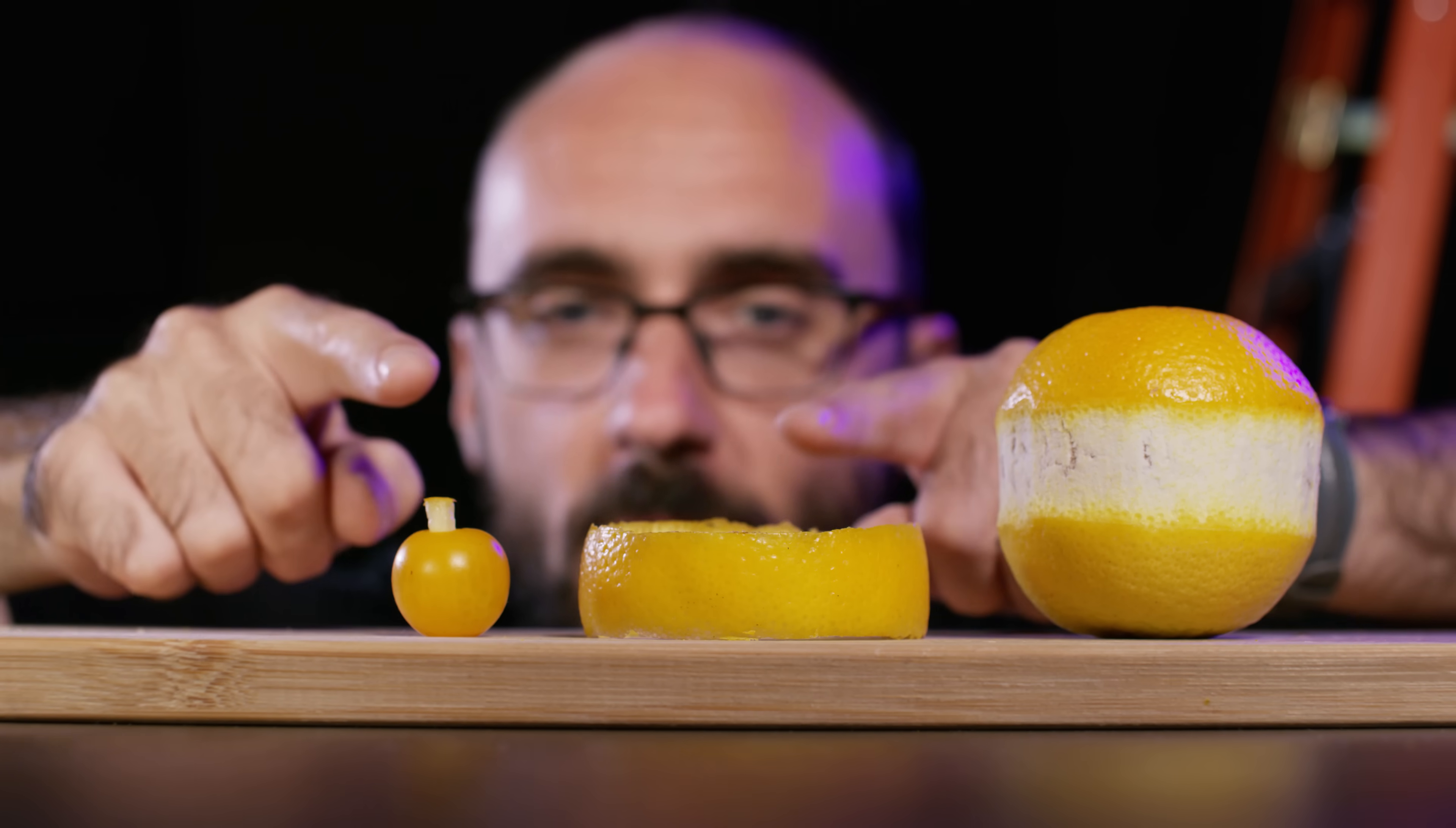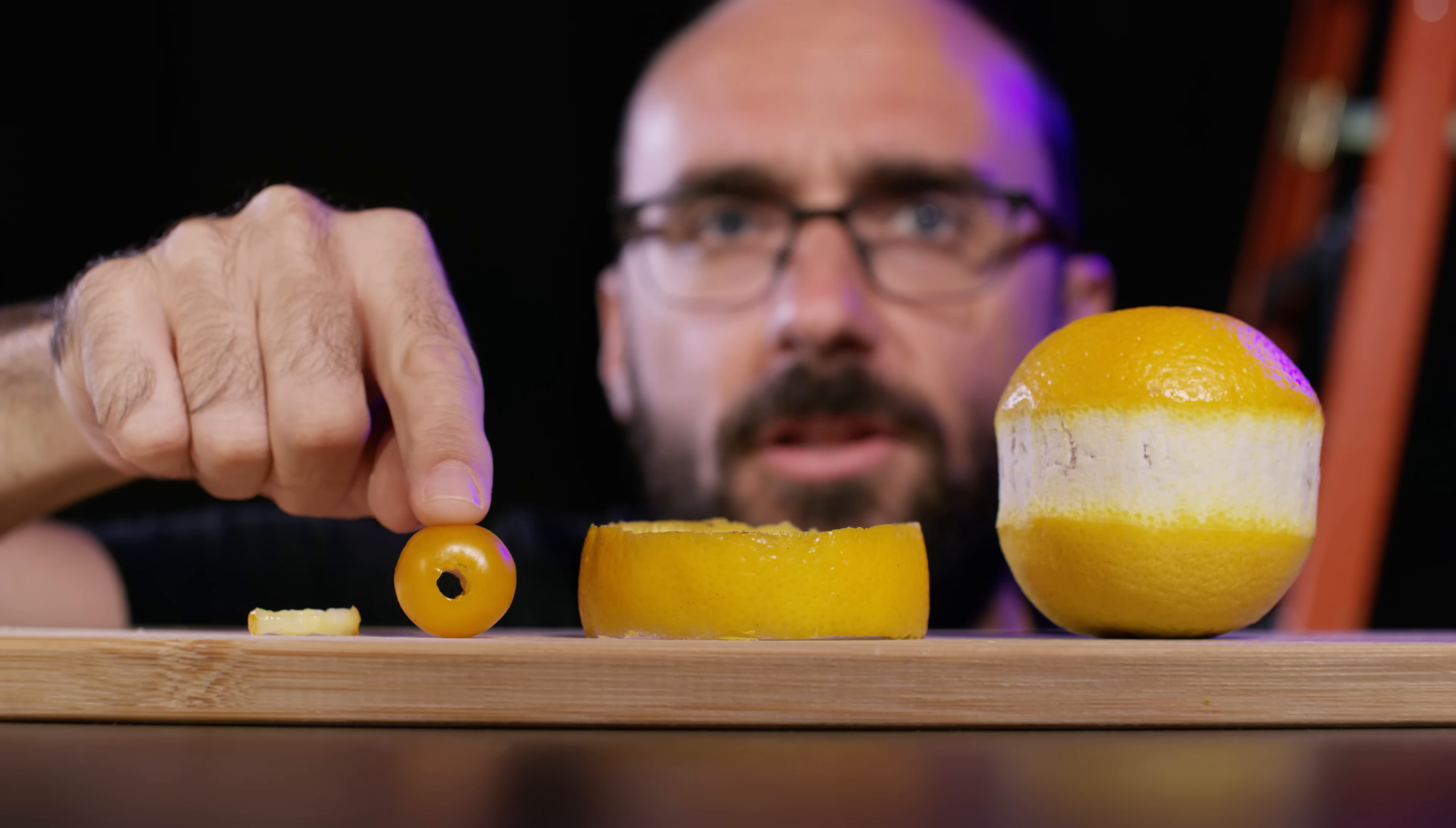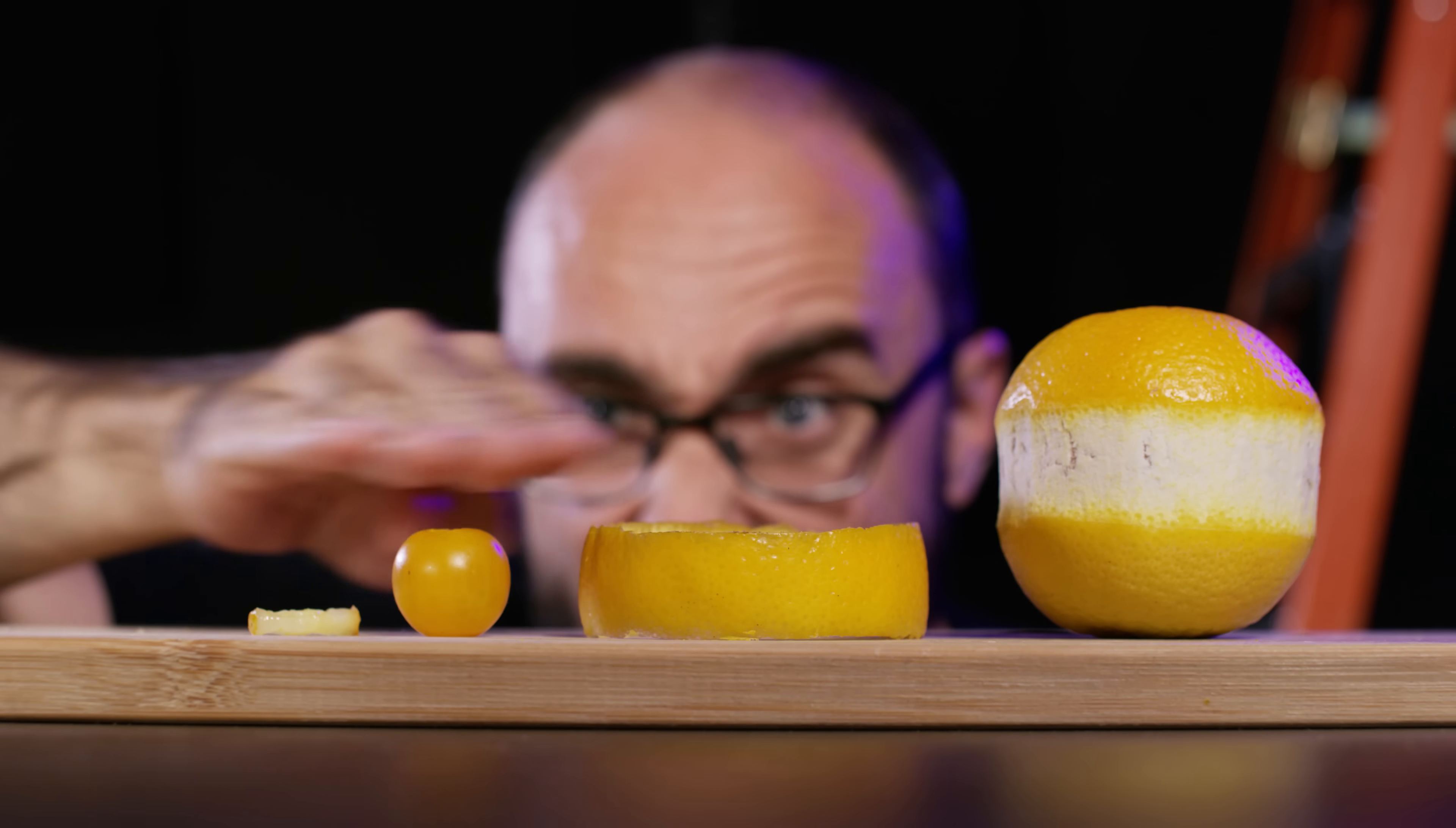I have here two napkin rings from very differently sized spheres. One is from a tiny ball, just a little tomato that I've cored, so it's got a little hole in it right there. The other napkin ring is made from an orange, but both napkin rings have the same height.